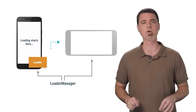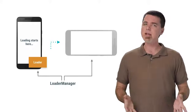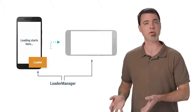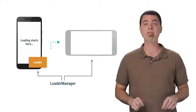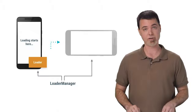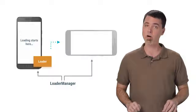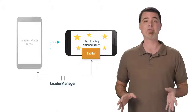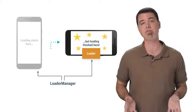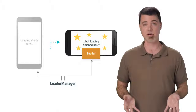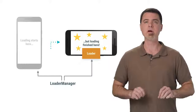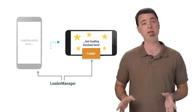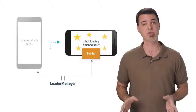Let's take a look at how this works. Instead of kicking off your work in an async task or some other thread you control, you ask the activity for an instance of a loader manager. Send the work to the loader manager, and it will make sure that your work may be handled properly in the face of configuration changes for the activity. The loader manager also caches the work results so that it won't be repeated with future changes.